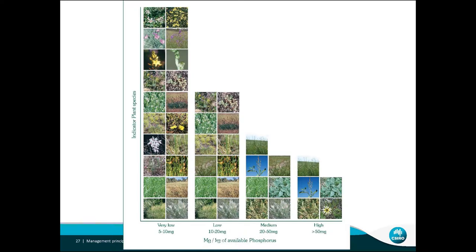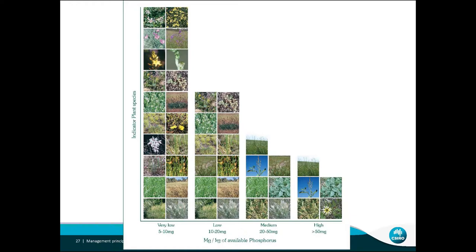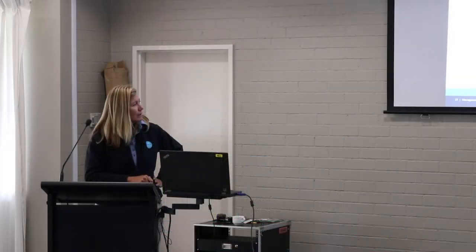Typically our soils were quite low in phosphorus and nitrogen — between about 5 to 10 milligrams per kilogram Colwell P. Things like orchids, lilies, and some of the sub-shrubs are all very happy with that. As we move into slightly higher low-nutrient levels, orchids and lilies tend to drop out. Going into medium levels — 20 to 50 milligrams per kilogram Colwell P — we've got some wallaby grass, a few annual exotics, some sorrel, rye grass, barley grass and a few weeds.